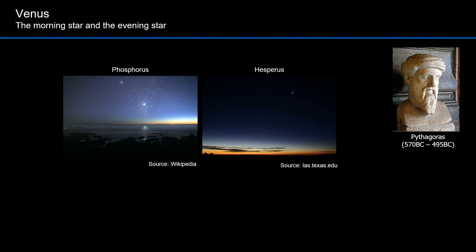Pythagoras was an Ionian Greek philosopher and mathematician, best known for the Pythagorean theorem. He was also one of the first to realize that the bright evening star was the same as the bright morning star.